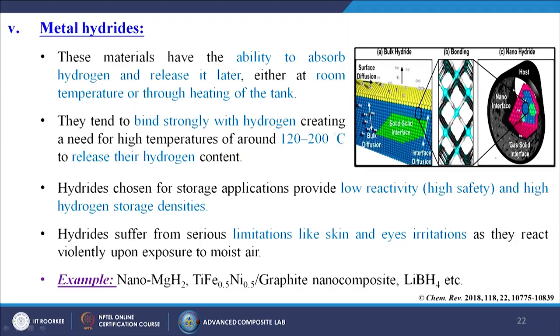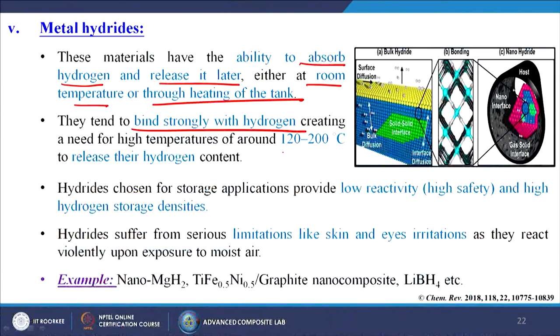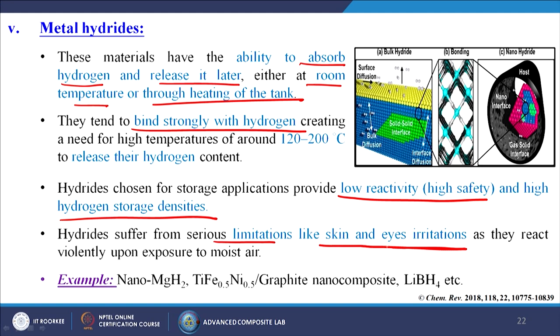Next are metal hydrides. These materials have the ability to absorb hydrogen and release it later either at room temperature or through heating of the tank. They tend to bind strongly with hydrogen, creating a need for high temperatures of about 120 to 200 degrees centigrade to release the captured hydrogen. At the time of release, we heat the material so that whatever hydrogen was captured comes out. Hydrides chosen for storage applications provide low reactivity — meaning high safety — and high hydrogen storage densities. However, hydrides suffer from serious limitations like skin and eye irritations, and they react violently upon exposure to moist air. Examples include nano magnesium hydride, TiFe-Ni graphite nanocomposites, and LiBH₄.